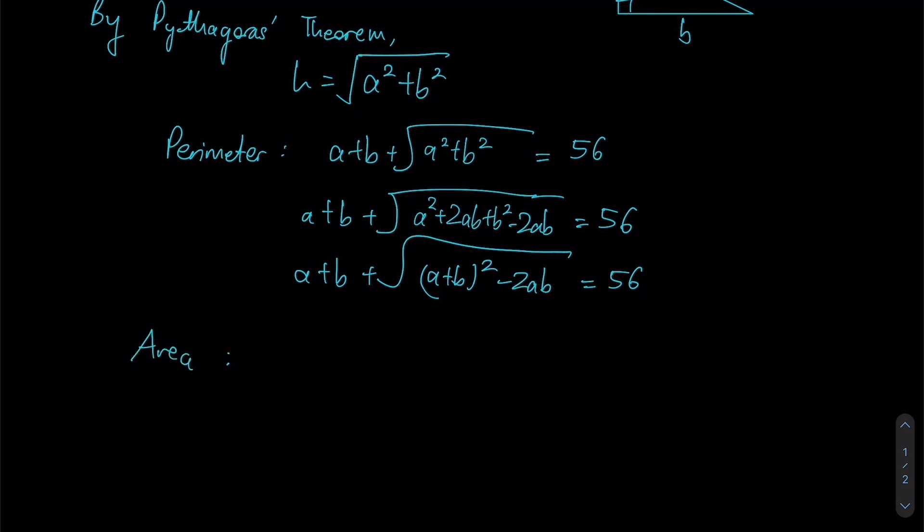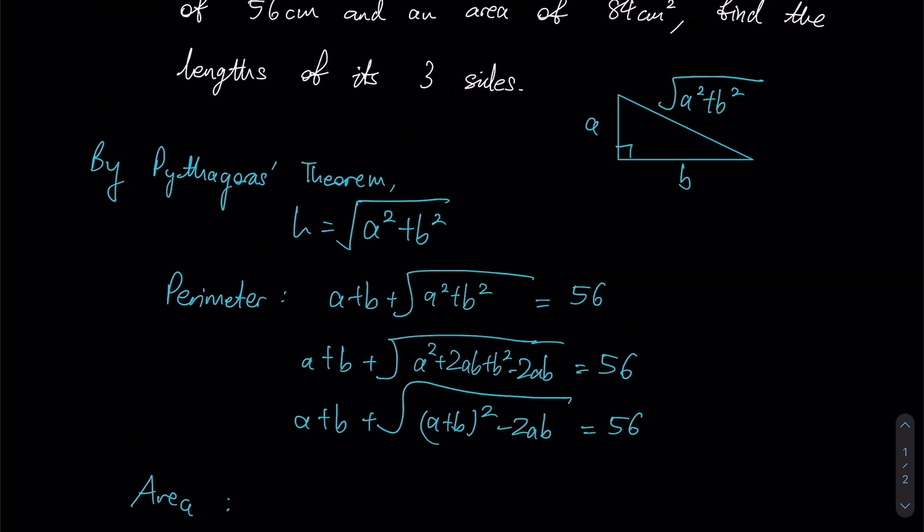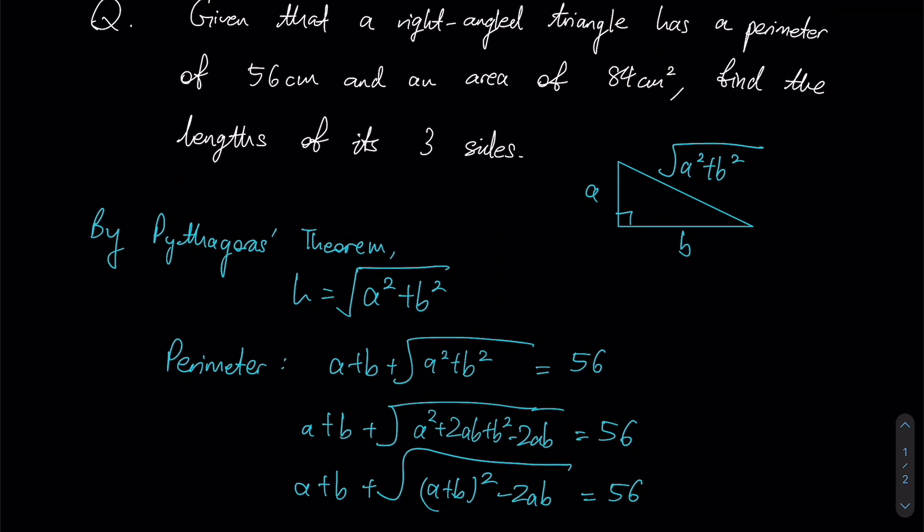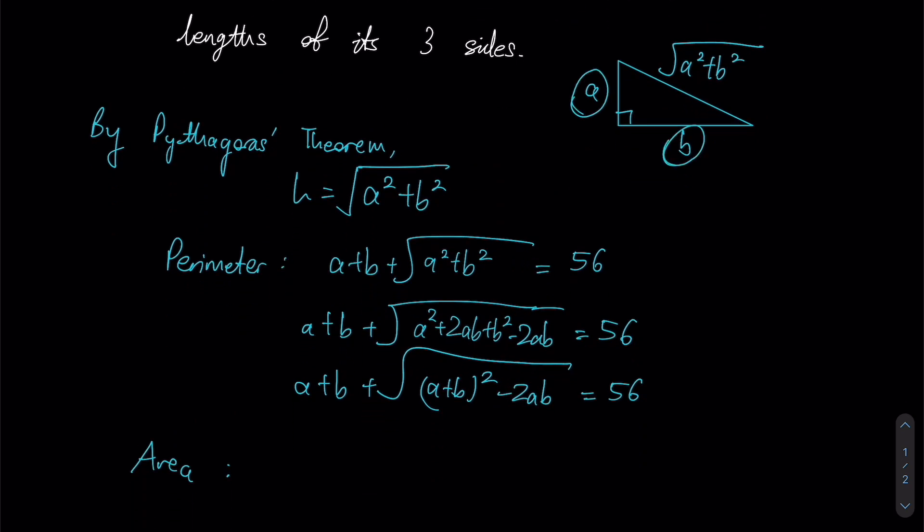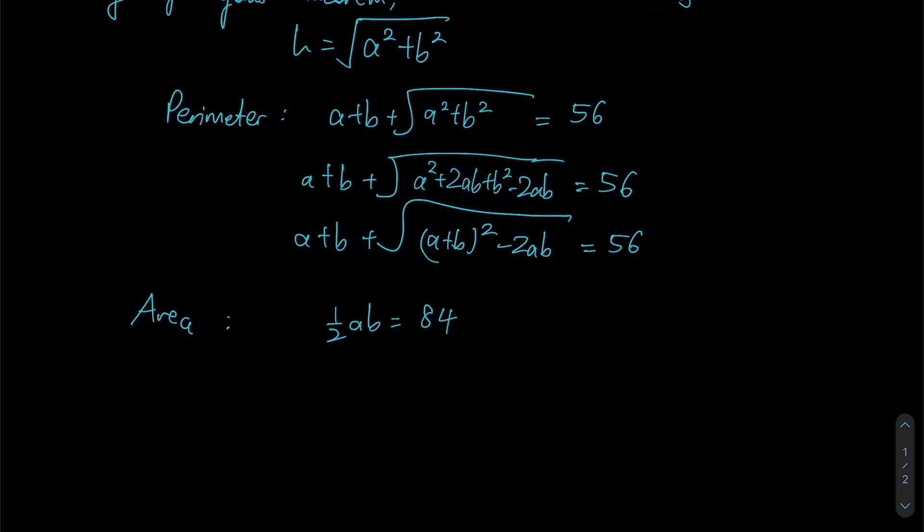So now let us see whether we can craft an equation regarding the area. We know since the area is 84 cm squared, there will be half times base times height, which is half AB. And since we know what half AB is, simply multiplying it by 4 will give us a value for 2AB, which will give us 336 over here.